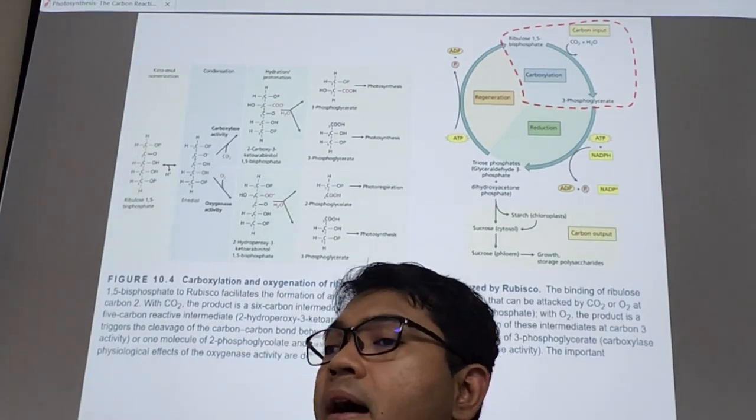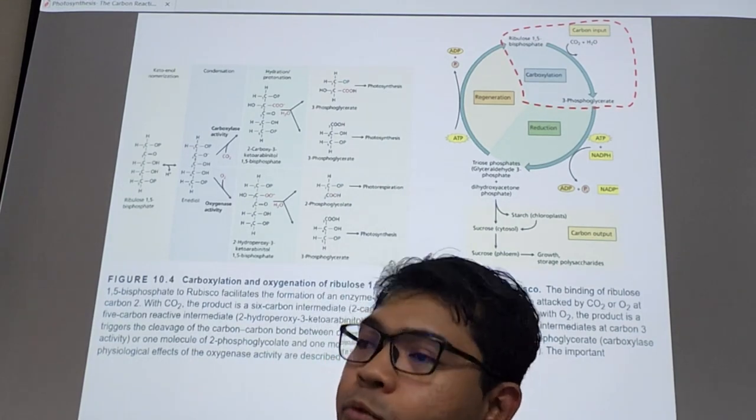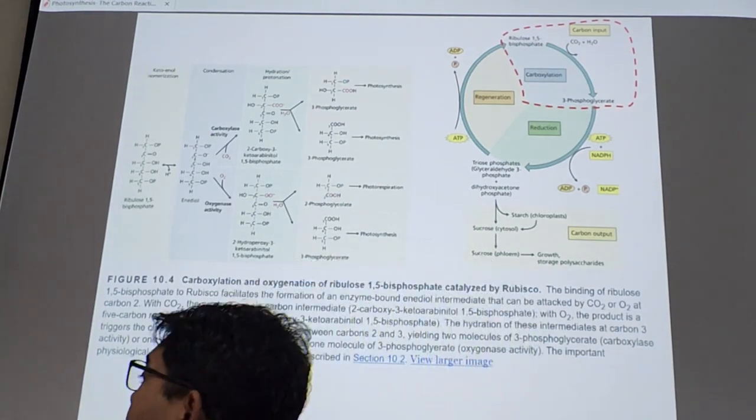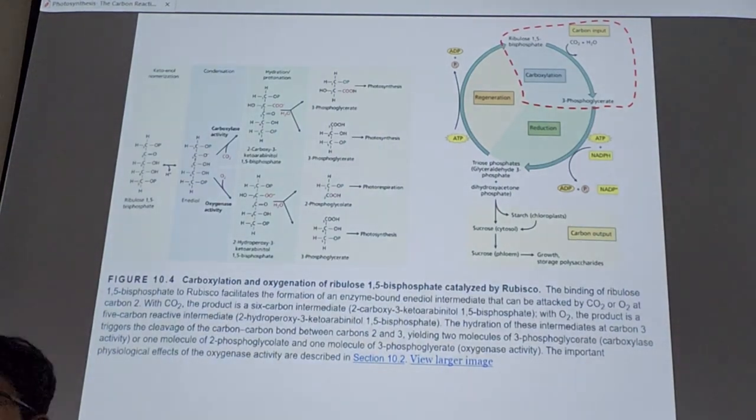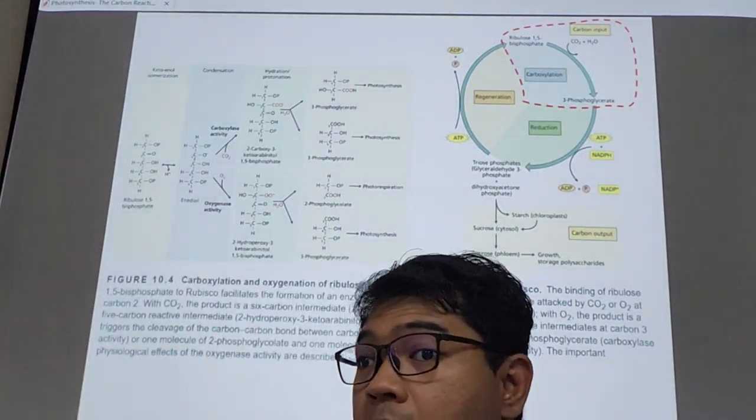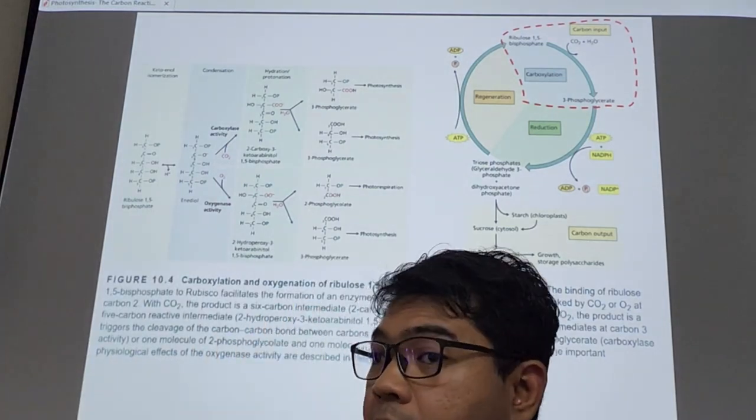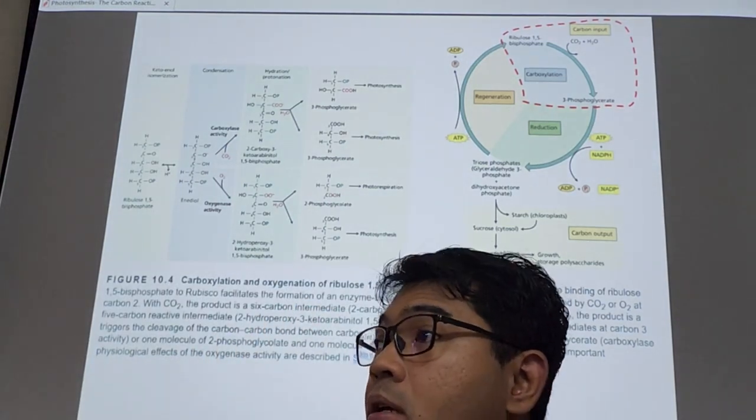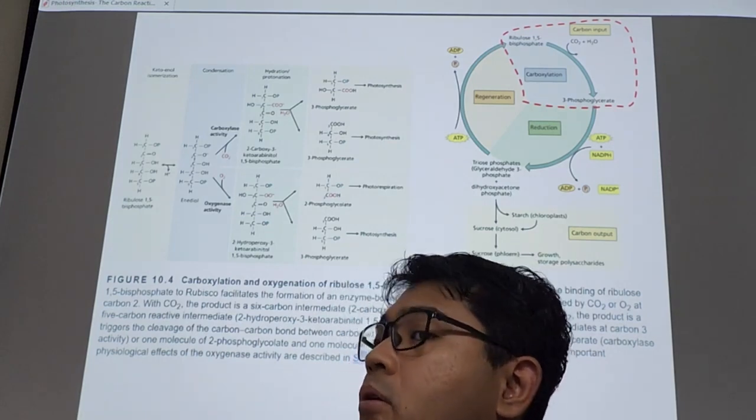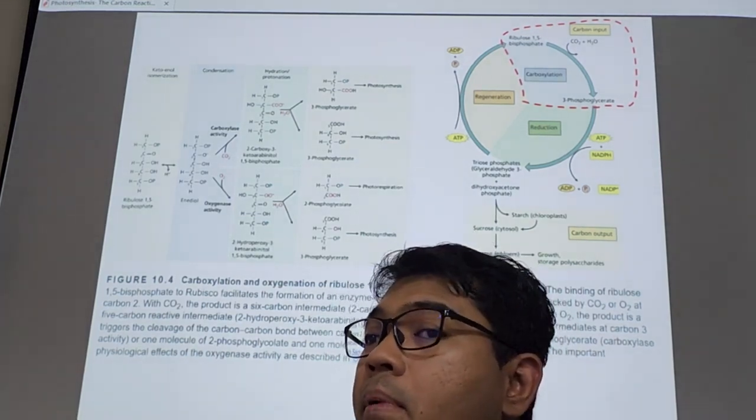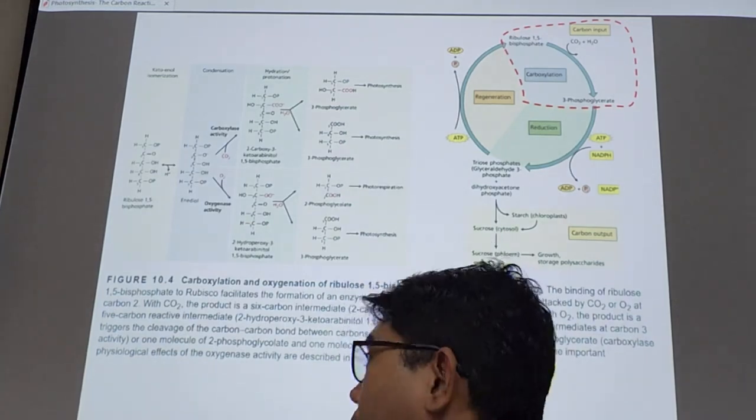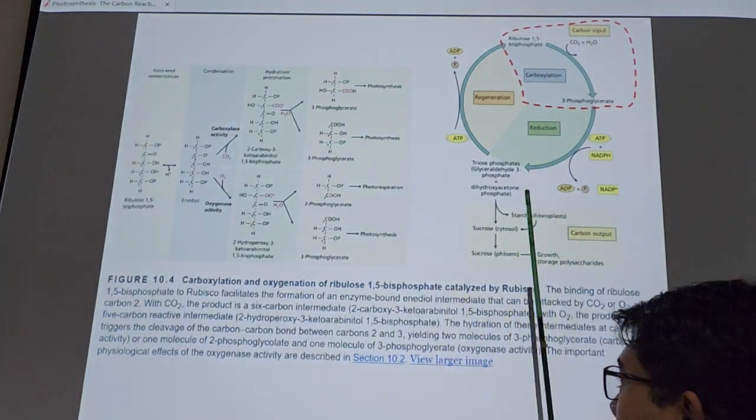It will cause other organelles to intervene as well. This glycolate needs to be detoxified. To detoxify glycolate, you need three organelles: you need the chloroplast, you need the peroxisomes, you need the mitochondria. We will learn, I think next week, about this photorespiration in detail.